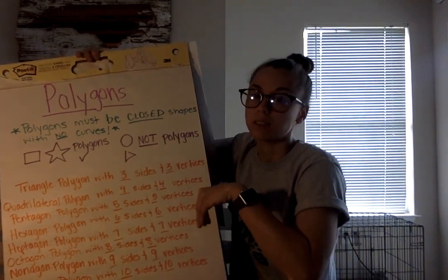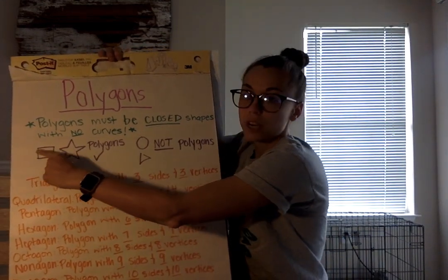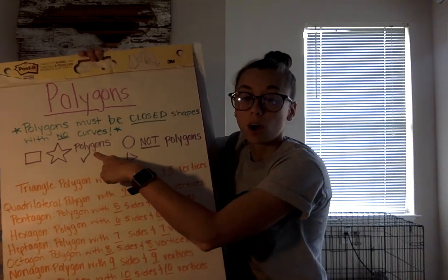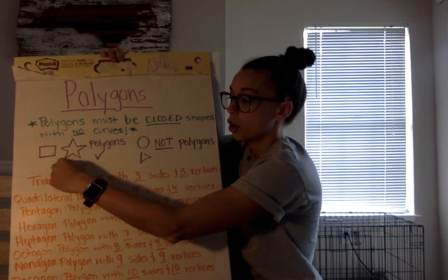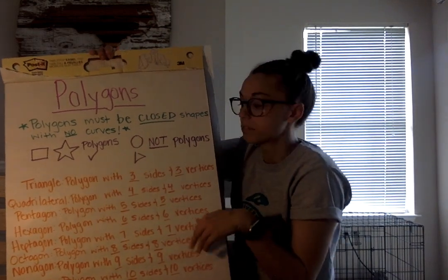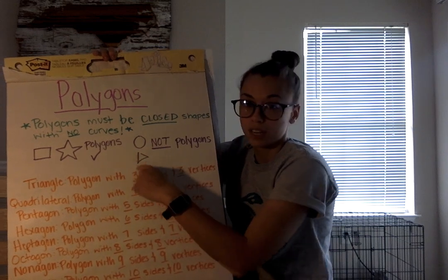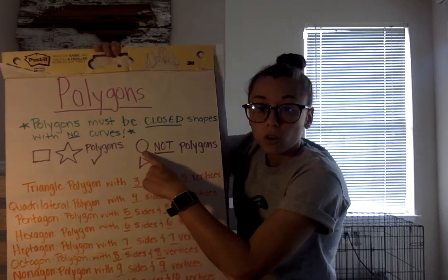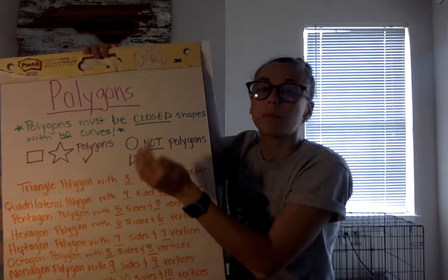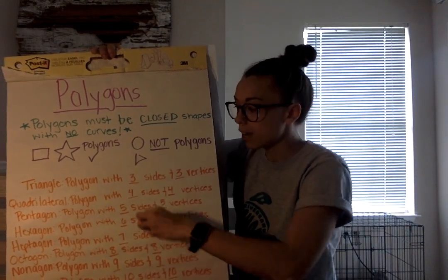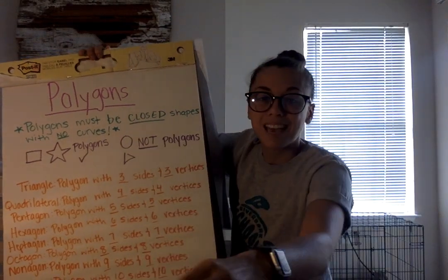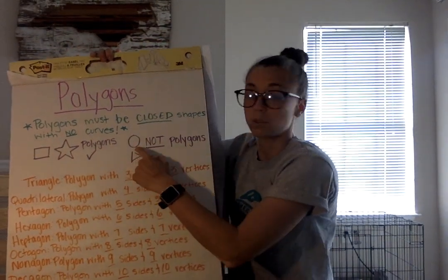So I gave us some examples and non-examples here. These two shapes — a rectangle and a star — are polygons because there are no openings, they're both closed, and there are no curves. Now over here, a circle — we all know and love it — it's a shape, but it's not a polygon because it is one big giant curve, and we know that polygons cannot be curved shapes.